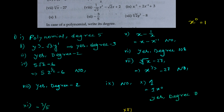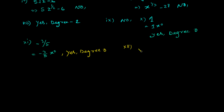The twelfth one is the cube root of 2 times y squared minus 8. The cube root is not above the variable — it's only with the constant coefficient part. The power above the variable is a non-negative integral, so yes — it is a polynomial and the degree will be 2.